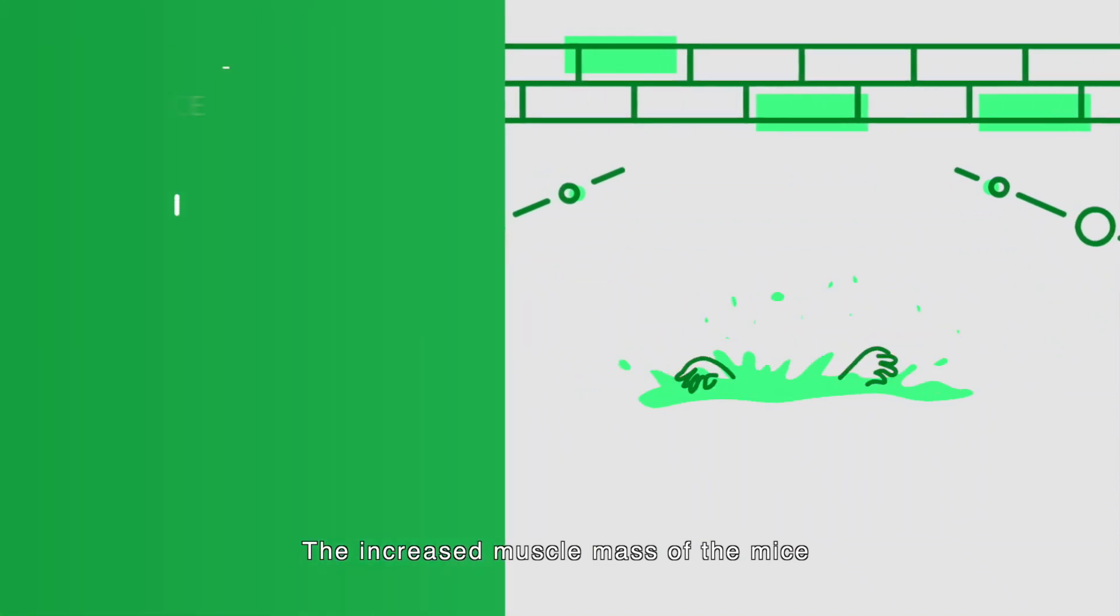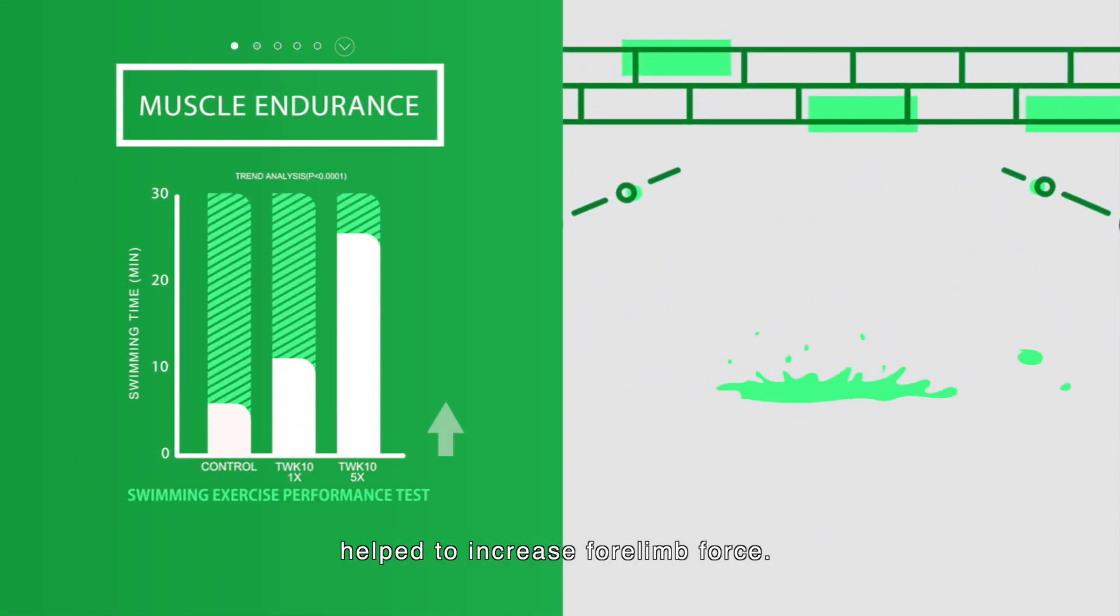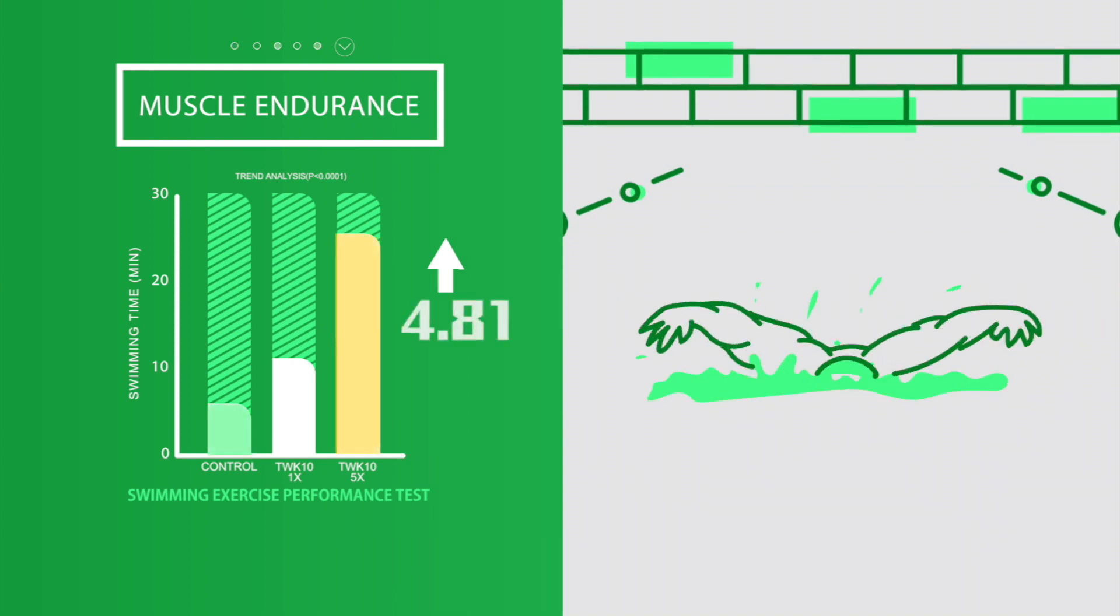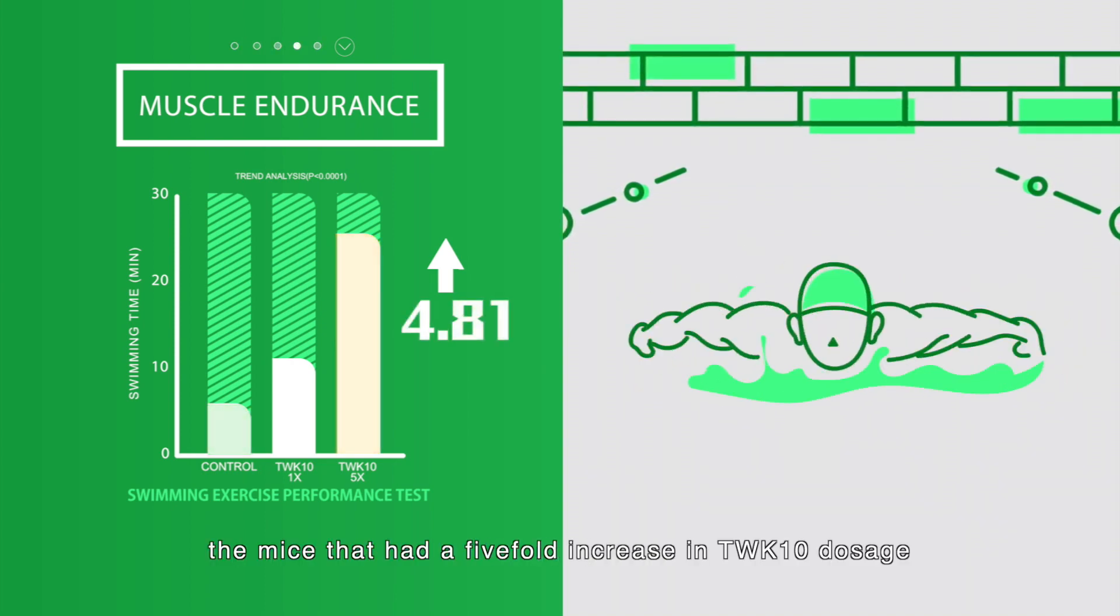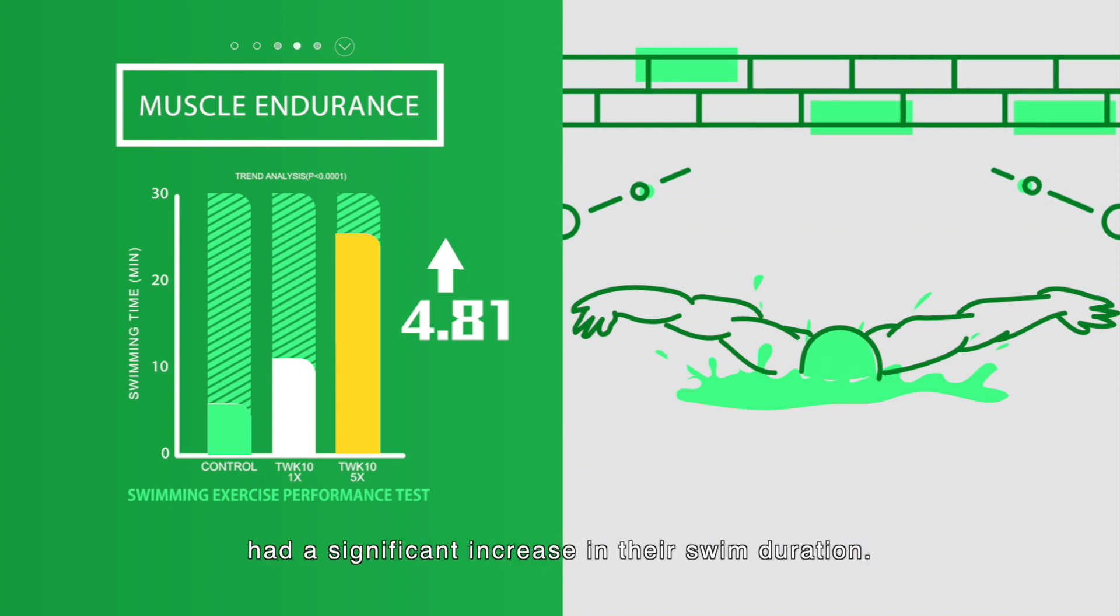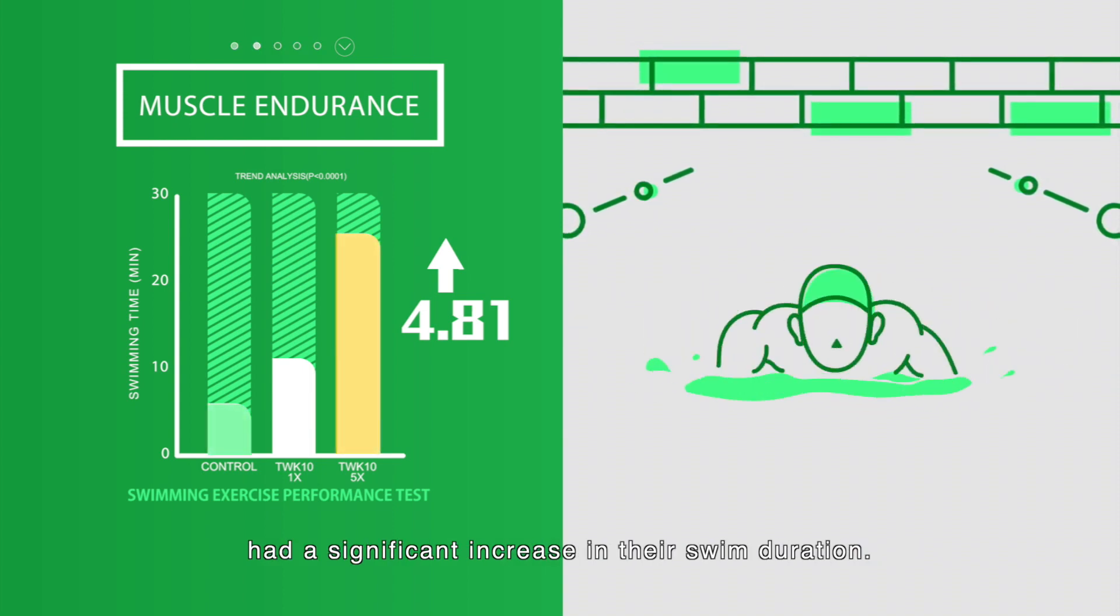The increased muscle mass of the mice that were fed TWK10 daily helped to increase forelimb force. In addition, the mice that had a five-fold increase in TWK10 dosage had a significant increase in their swim duration.